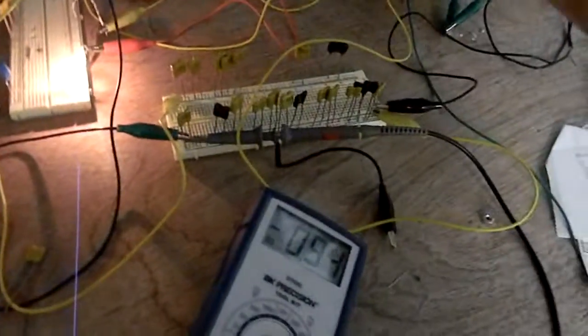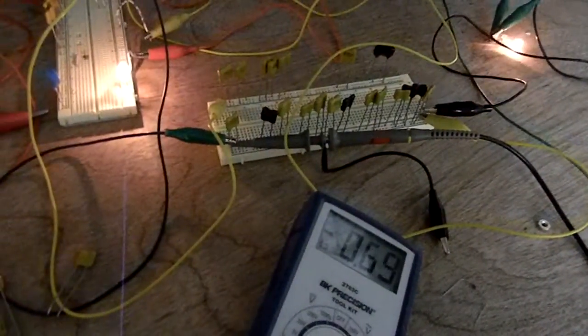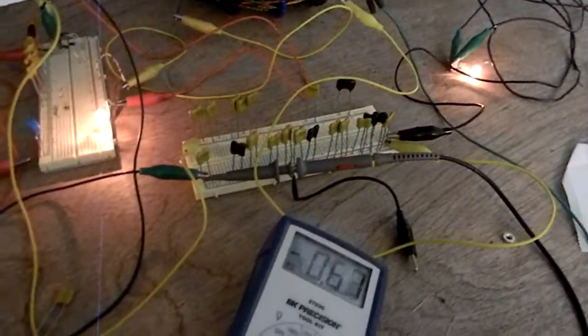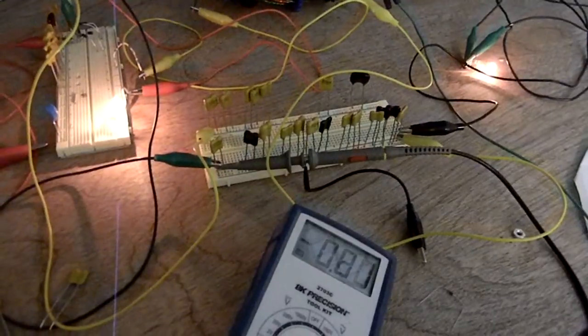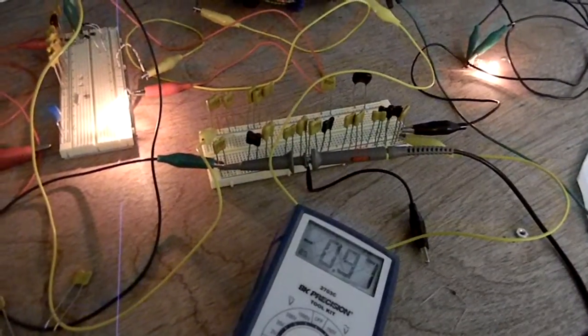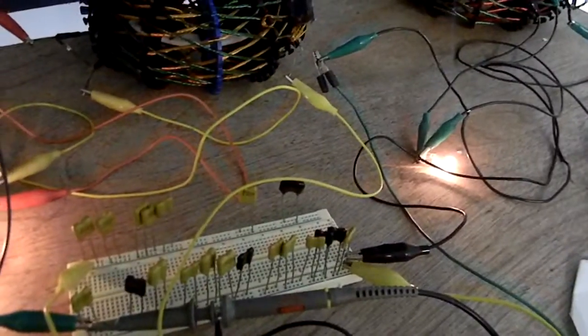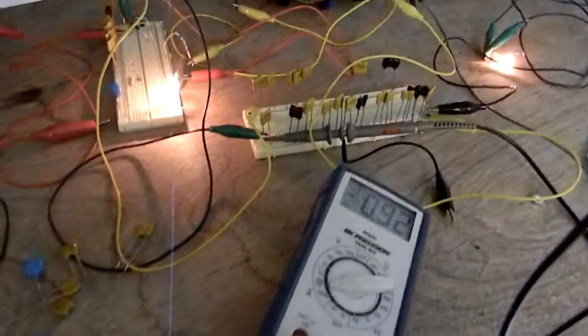We add another coil. Brightness goes down, amp draw goes down. And we tune back into resonance. There's 0.9. And we have two outputs, same amp draw.